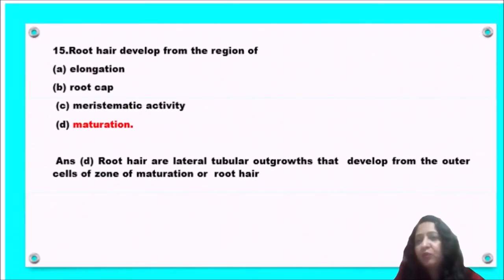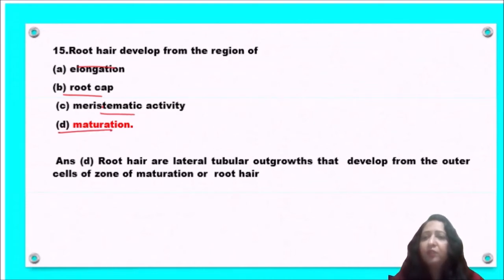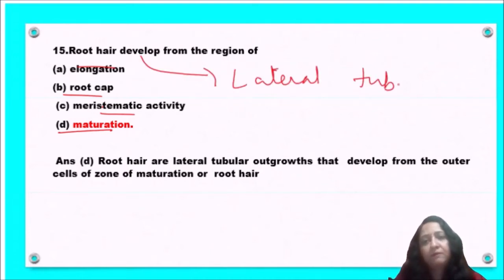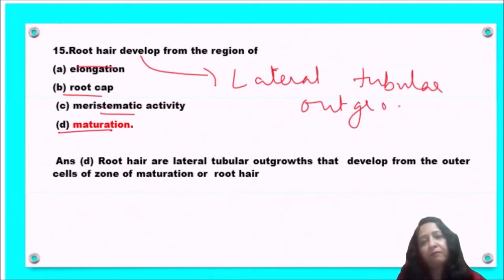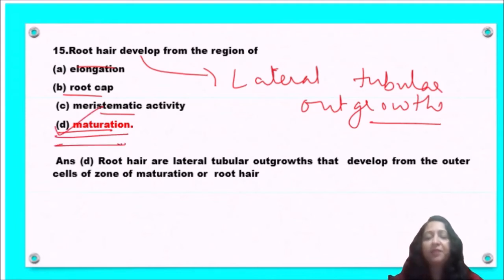Next question: root hairs develop from the region of elongation, root cap, meristematic zone, or maturation? Root hairs are lateral tubular outgrowths and they develop from the outer cells of the zone of maturation. So option D, maturation, is the correct answer.